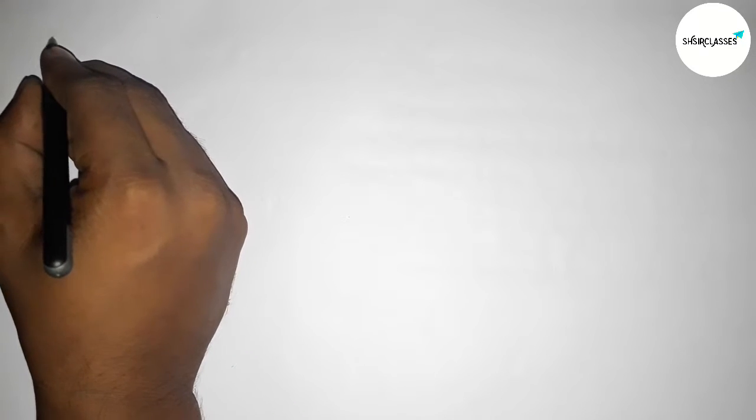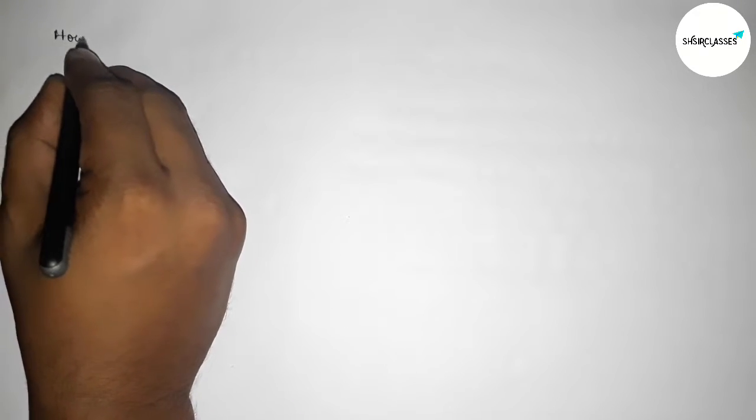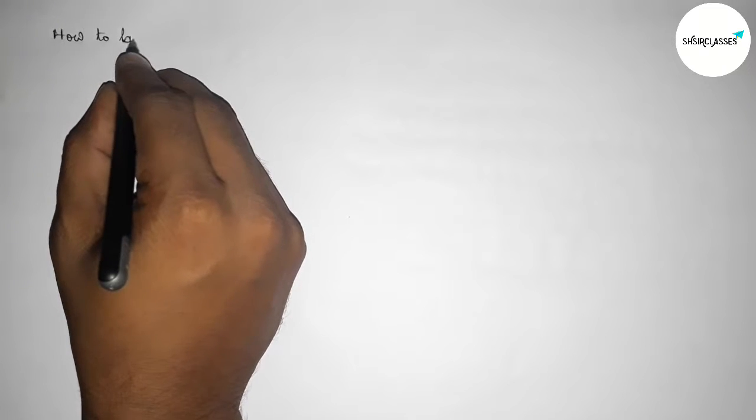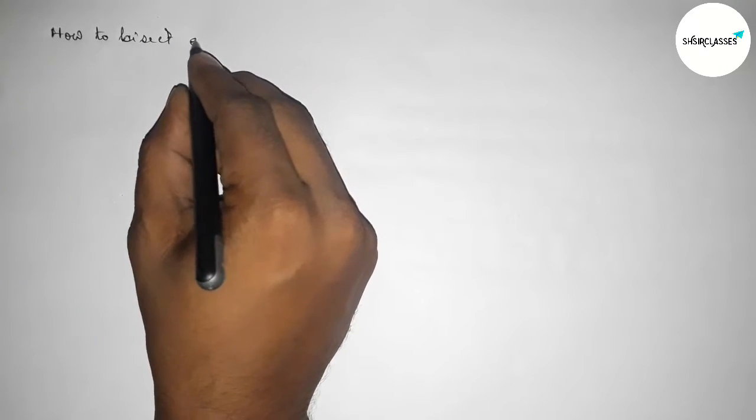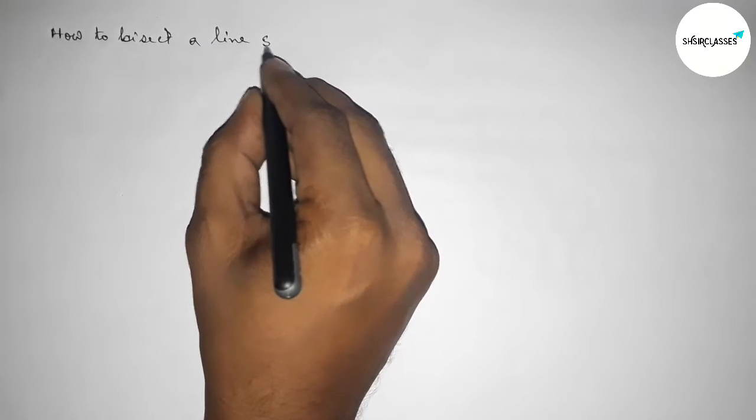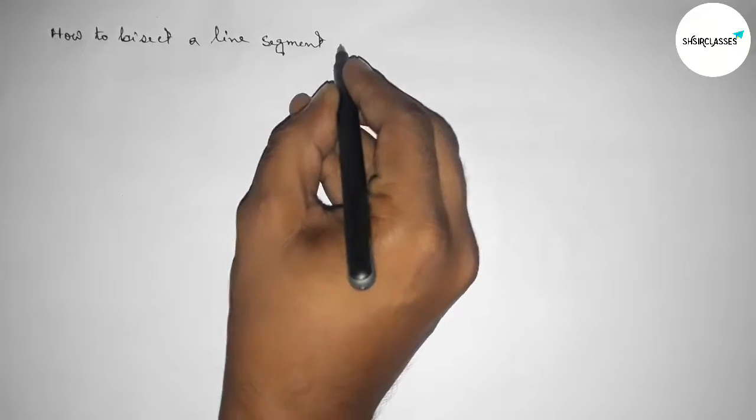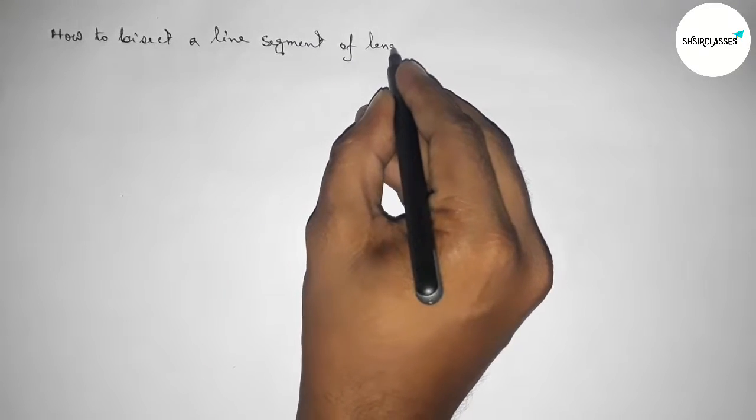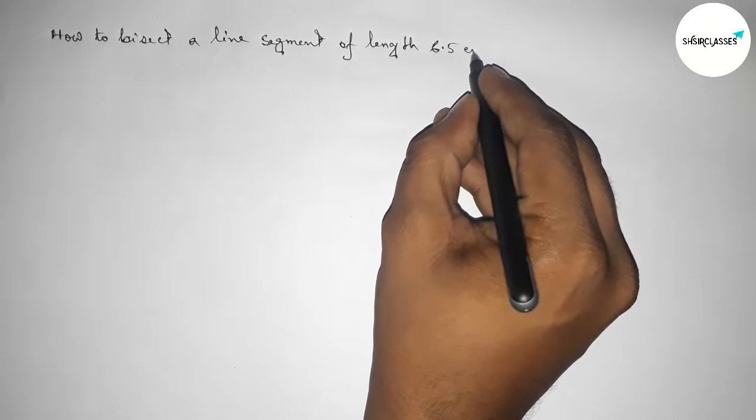Hi everyone, welcome to SAI Share Classes. Today in this video, we're discussing how to bisect a line segment of length 6.5 centimeters by using a compass. So let's start the video.